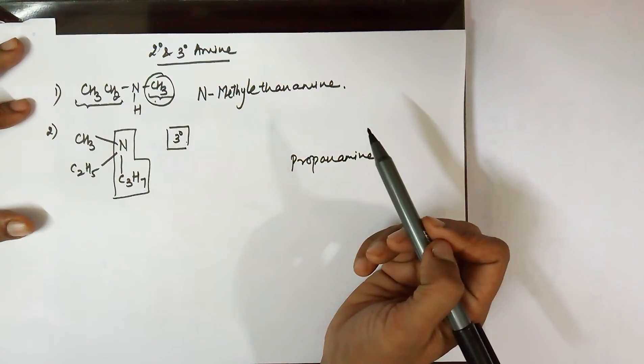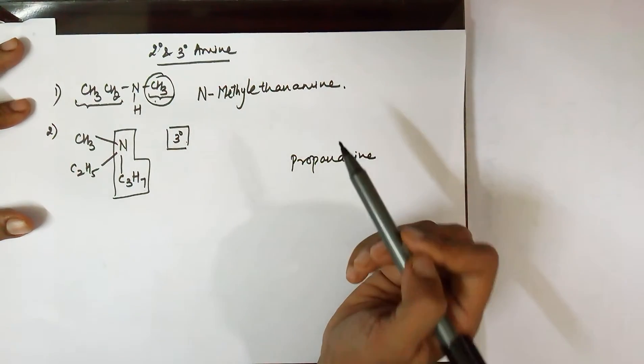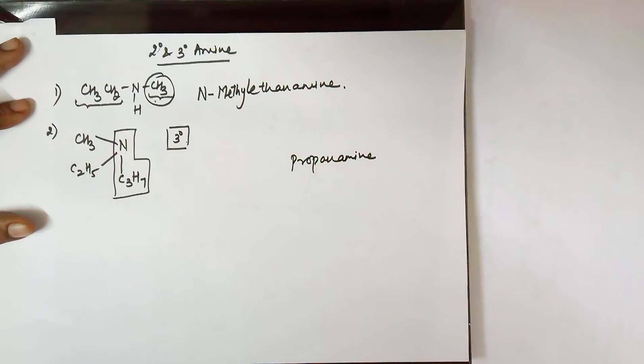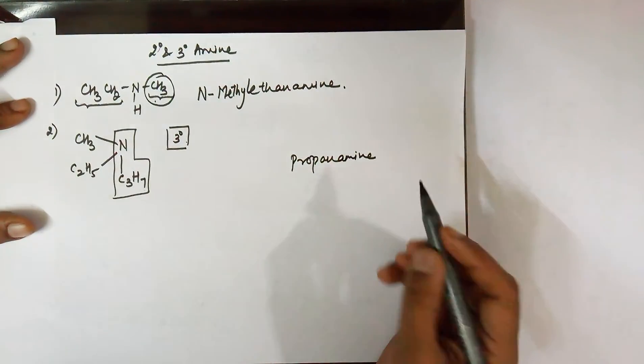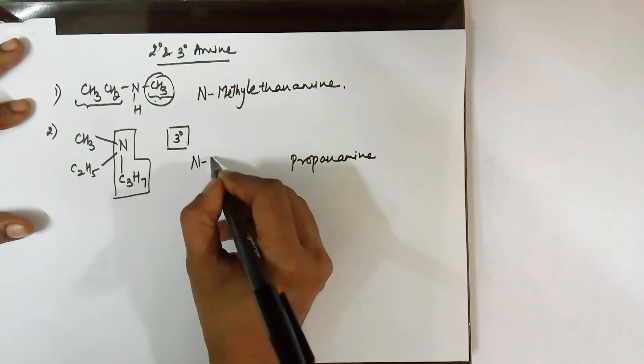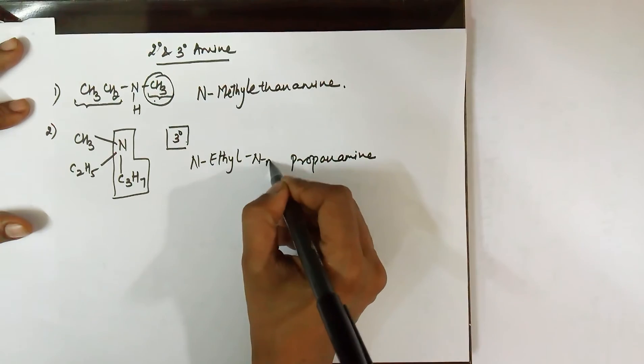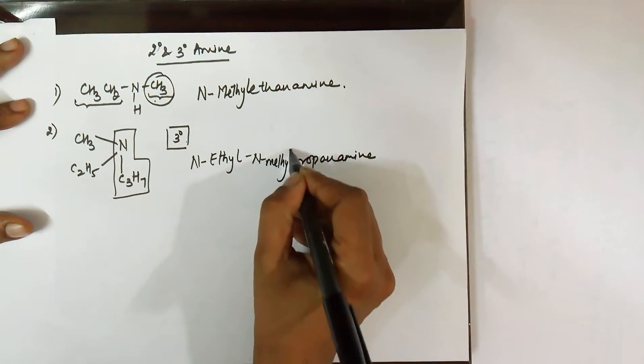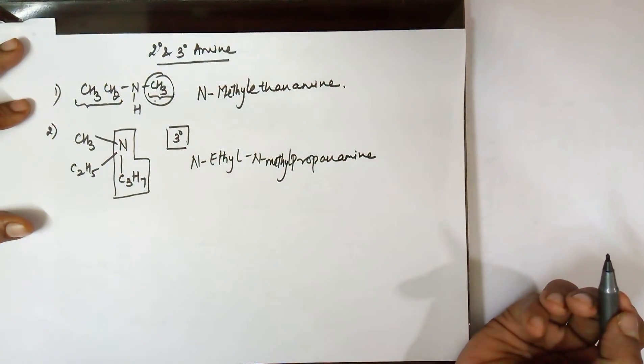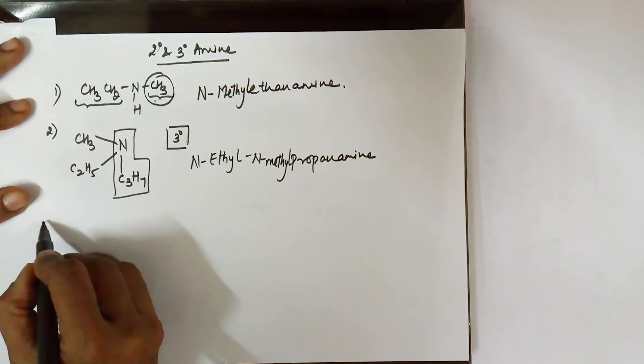Following the alphabetical rule, you will first mention N-ethyl. N is not the alphabet here; N is signifying the positioning, so it is acting as a number. So you have N-ethyl-N-methyl-propanamine as the name for this particular compound.